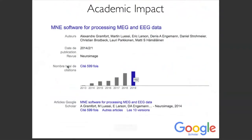In terms of academic impact, it's important to give academic credit to people who spend time writing software. We convinced the NeuroImage editors to accept a software paper, which was not so common at the time. I remember having to argue with Peter Bandettini about whether it was okay to publish a software paper in NeuroImage — which is now perfectly fine and recommended. Giving academic credit to people investing their time in writing software is important.